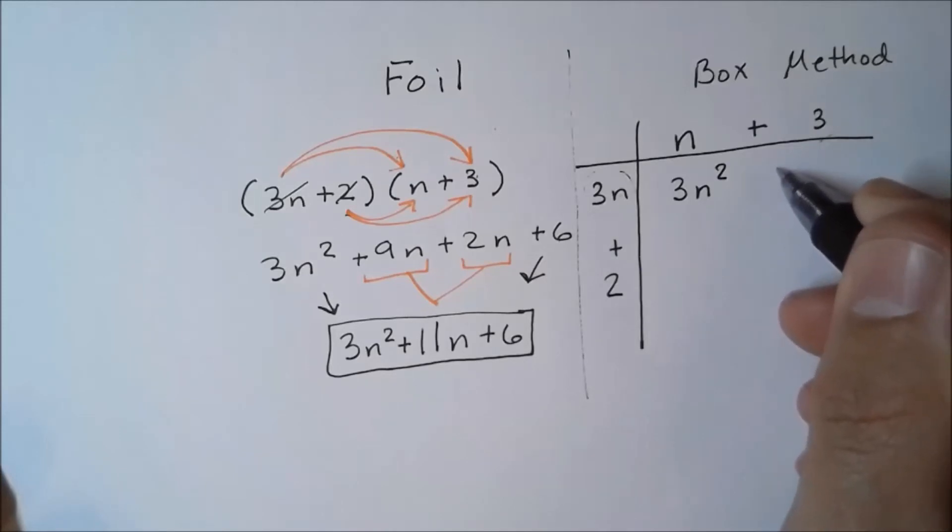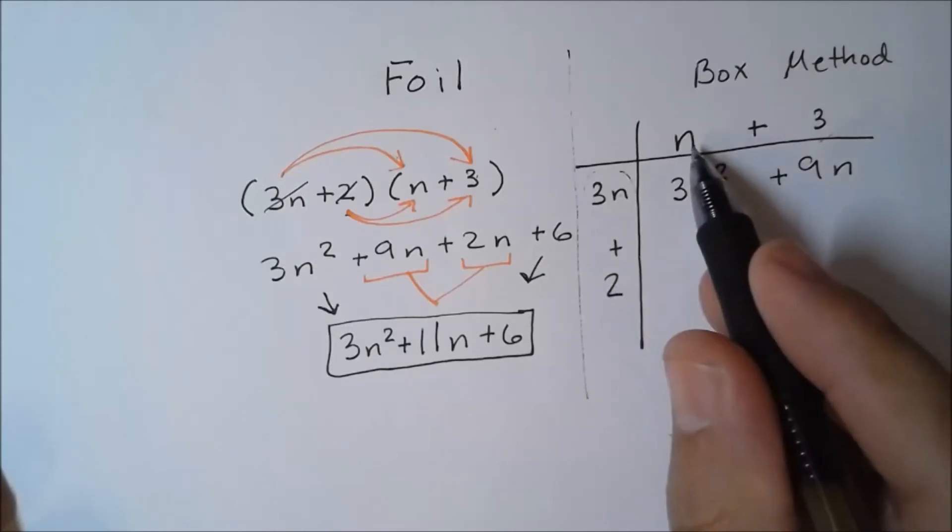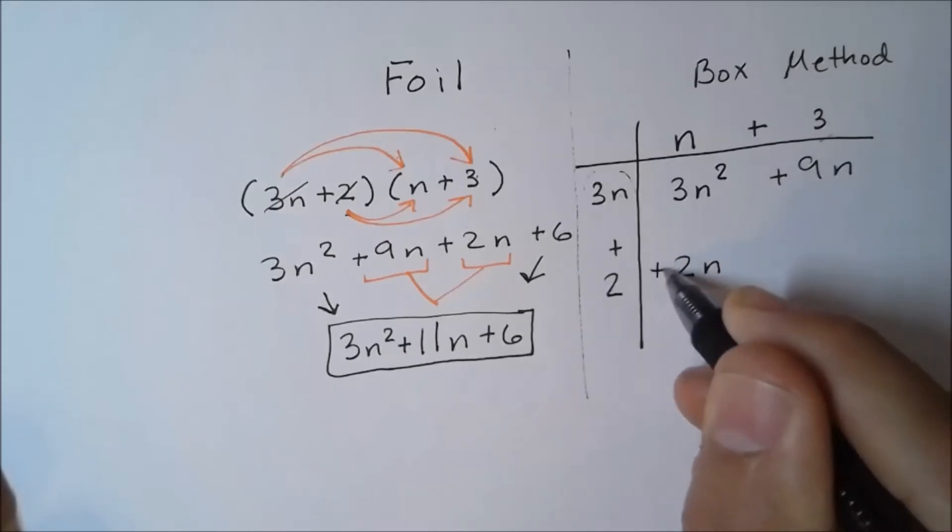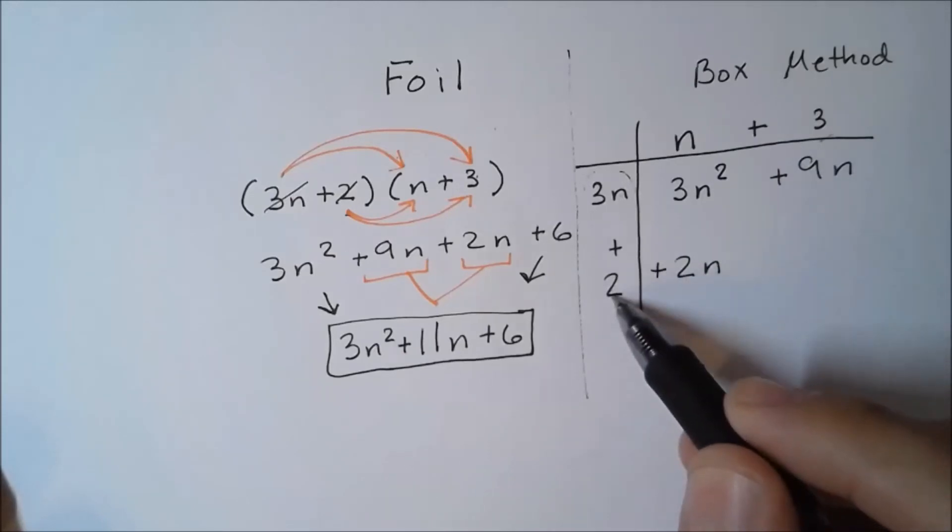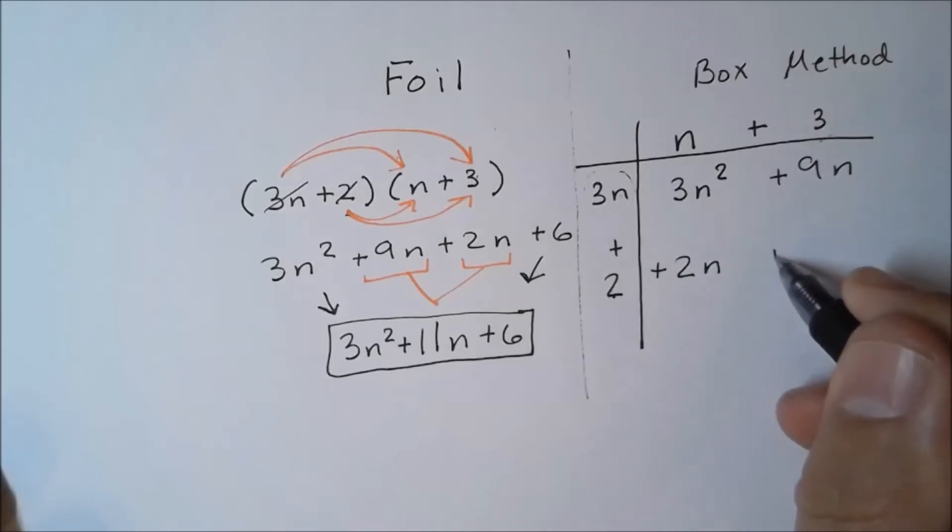Down here at the bottom, I have 2 times this n up here, so 2 times n, and that's going to give me a positive 2n. Then I have this 2 over and up times this 3, and that's going to give me a positive 6.